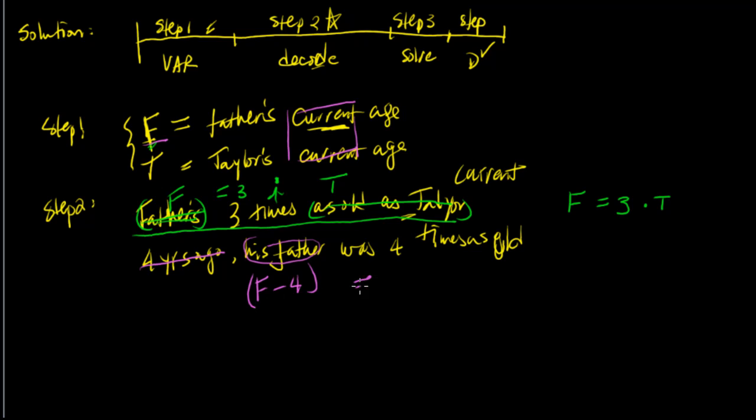He was four times as old. Now, here's the trick of this entire problem. If everything else is making sense up until now, pay attention to this four times as old. Now, four years ago, Taylor's age is not T. Taylor's age is T minus four.